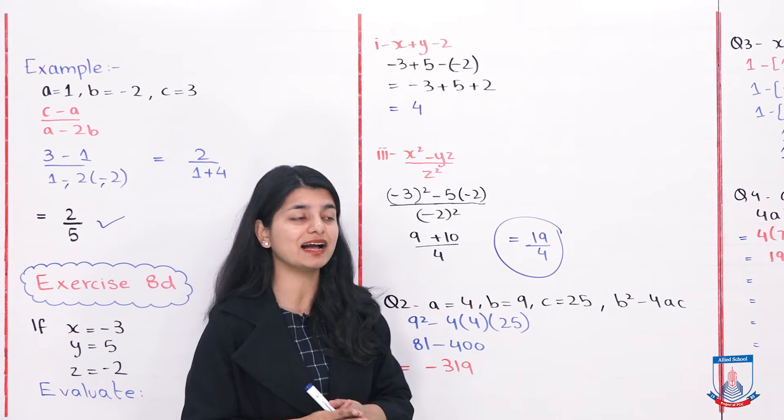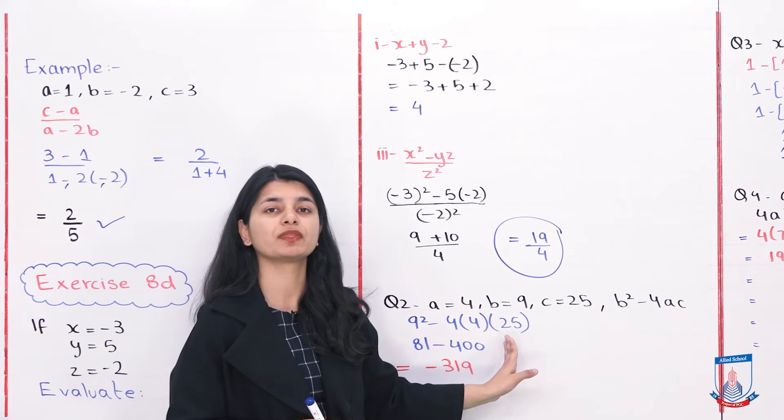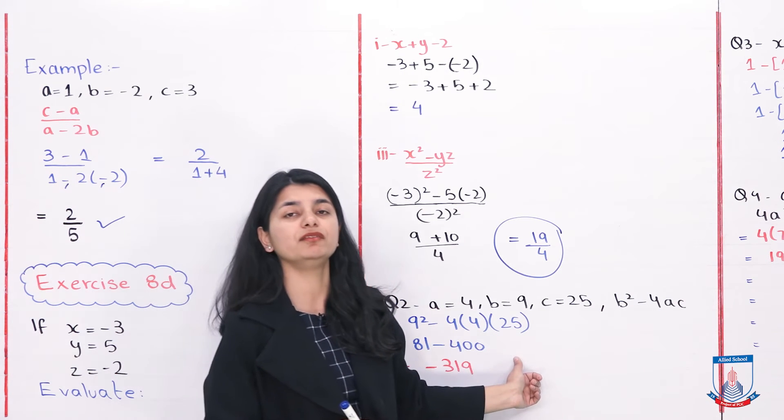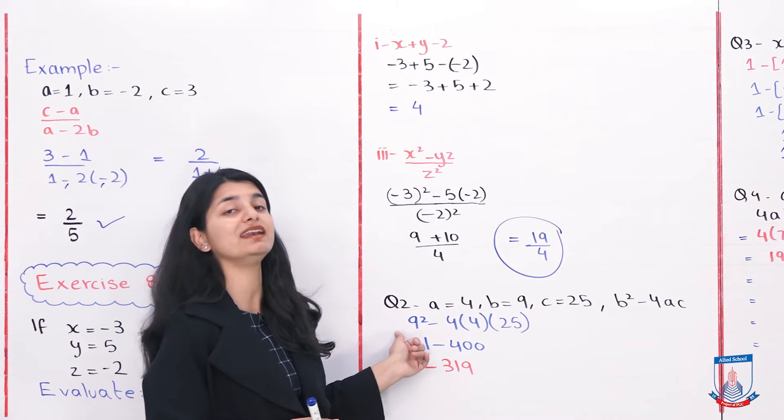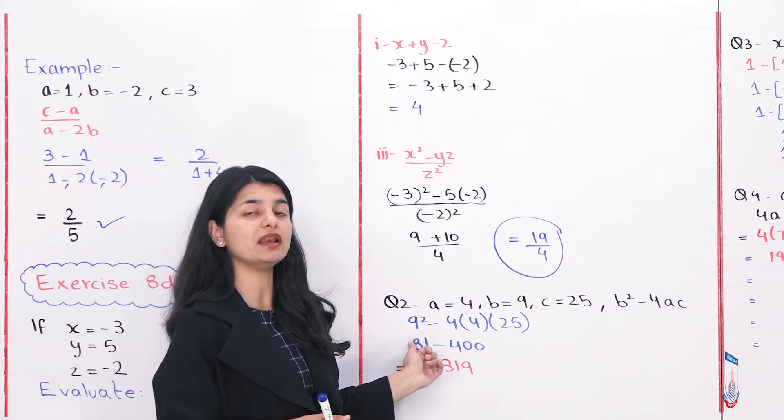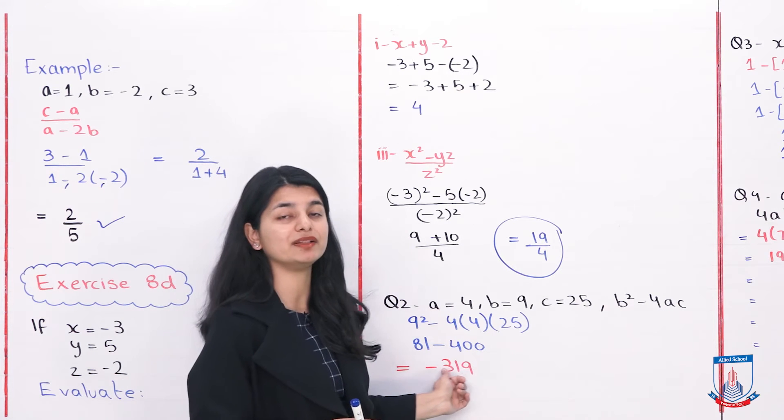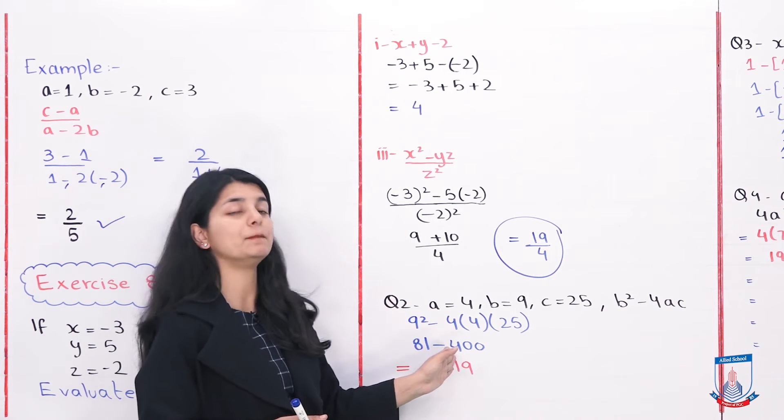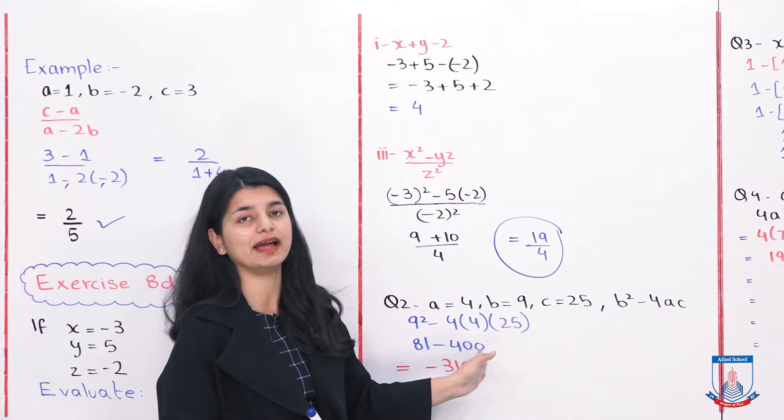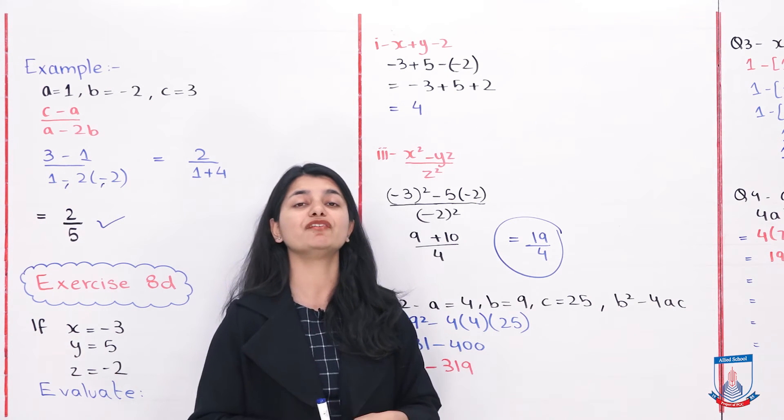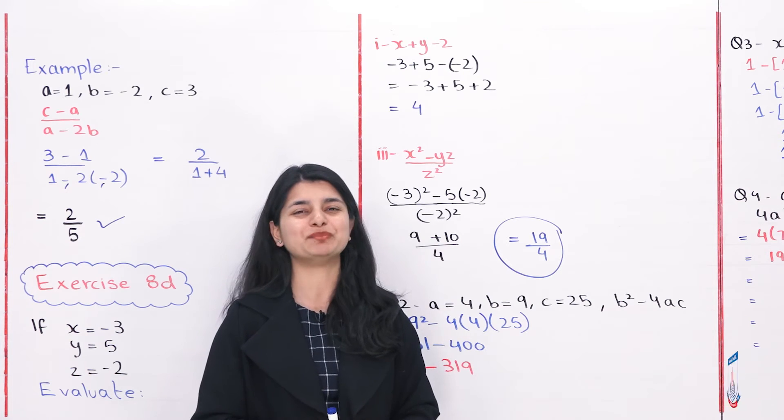Then you solve them. You have numbers now. 25 into 4 is 100, 100 into 4 is 400. 81 came from 9 squared, so 81 minus 400. The answer is minus 319 because you applied the minus sign to the larger number. That was another way of evaluating.